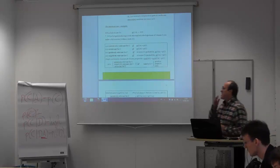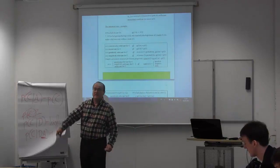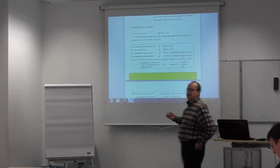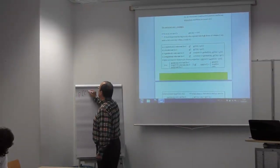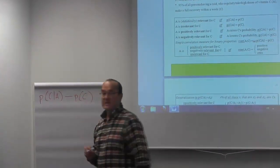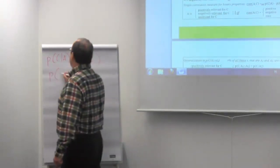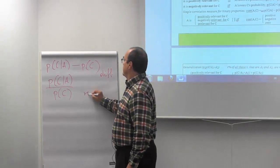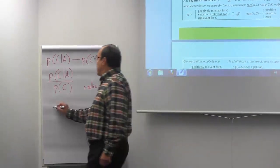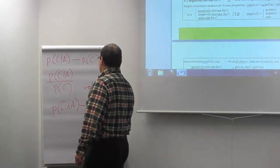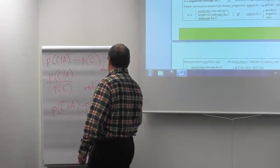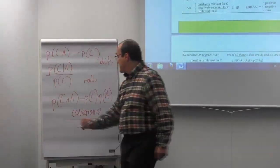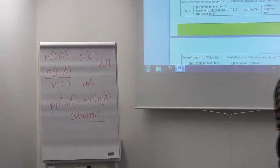In statistics there are different correlation measures. What I described is called the difference measure. Another is the ratio measure. Another is the covariance measure: the probability of the conjunction of C and A minus the product of the probability of C and the probability of A. These three measures are often mentioned in the theory of confirmation as three different measures. In statistics there is also what is called the effect strength, which is the difference measure divided by the standard dispersion.